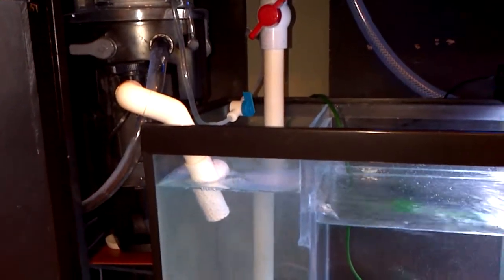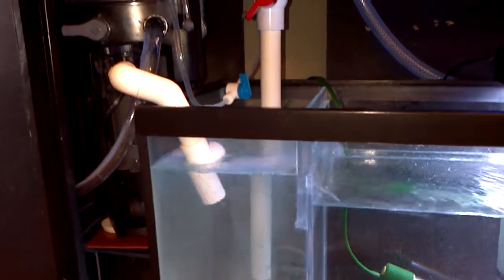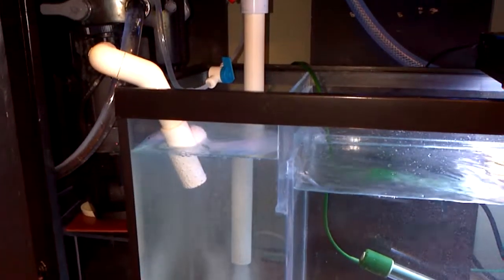The skimmer and the secondary overflow are going right into the first section. Probably going to fill that with live rock or make it a frag area.